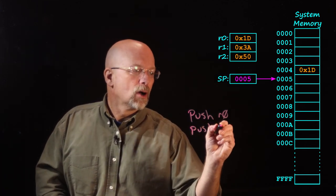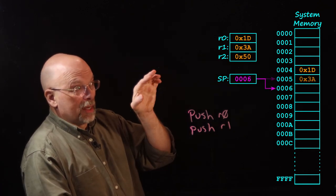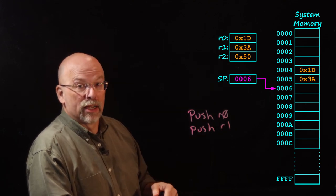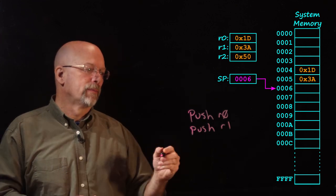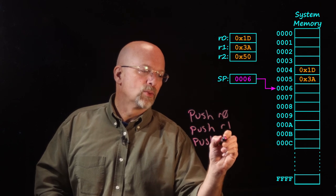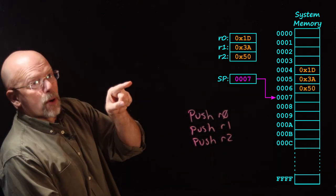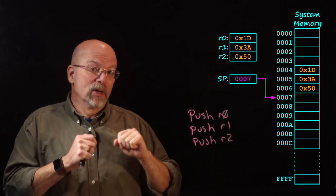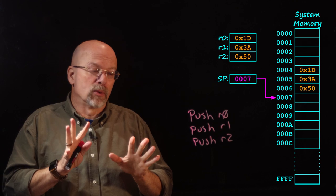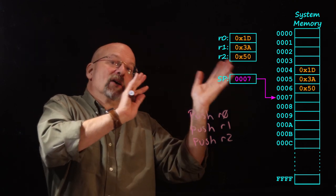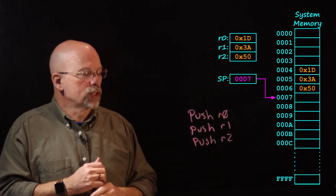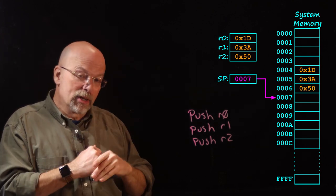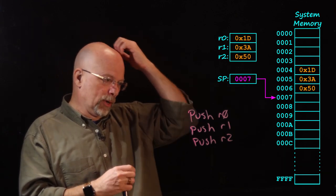Then I push R1. It takes the value in R1, stores it to address location five, and then increments the stack pointer to location six — the next place to put a value. Then we push R2. It takes the 50 from R2, makes a copy — and this is important: it's just making copies to store to memory, not actually modifying what's in R0, R1, or R2. Those values are left alone. Push R2 stores at six, where the stack pointer is pointing, then increments the stack pointer as it continues to grow through memory.